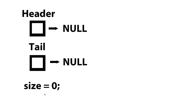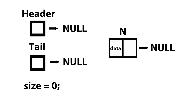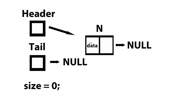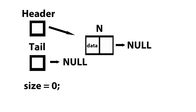From here, we can actually create our node — I'm just going to call it node n. Now that we know this is an empty list, once we create node n, we could have header point to the newly created node, and we could also have tail point to the newly created node. Header always points to the first node and tail always points to the last node. Since there's only one node, header and tail are both going to point to our newly created node. All that's left to do is increment the size.